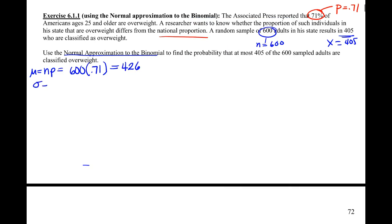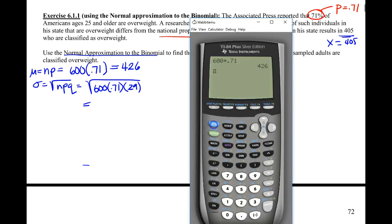We can also find our standard deviation, the square root of NPQ, which is 600 times that 0.71. Q is still our probability of failure or the proportion of non-successes here, so 0.29. I'll bring this up and we'll do the square root: 600 times 0.71 times 0.29, 11.1149.